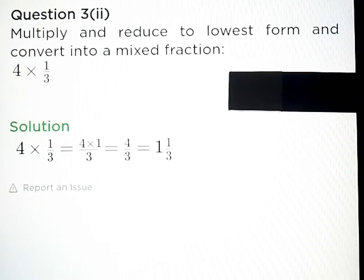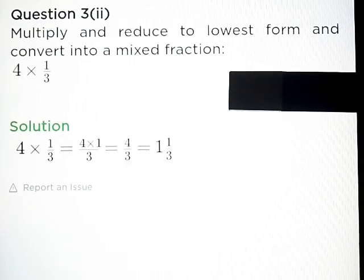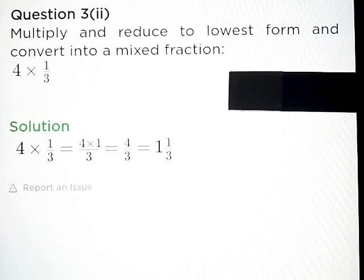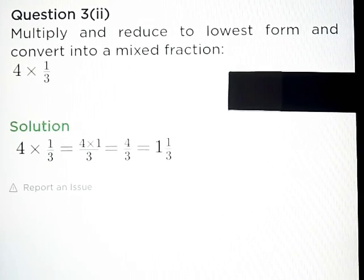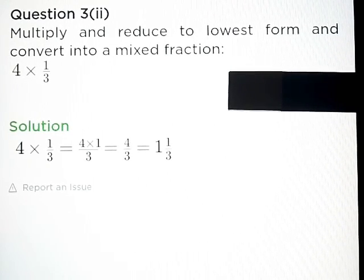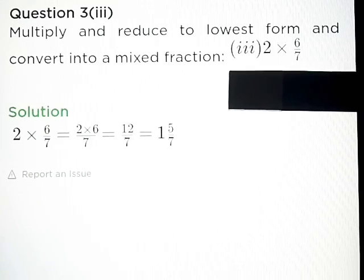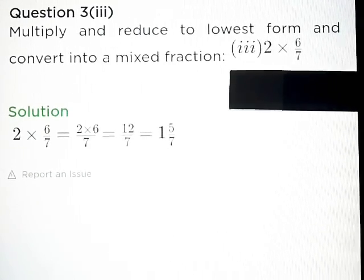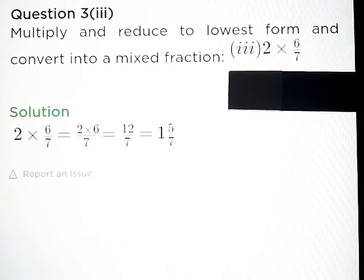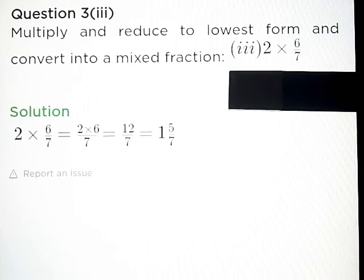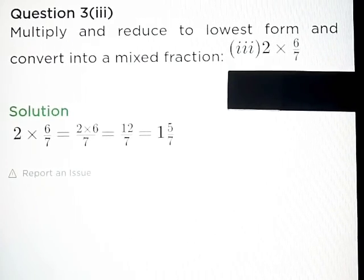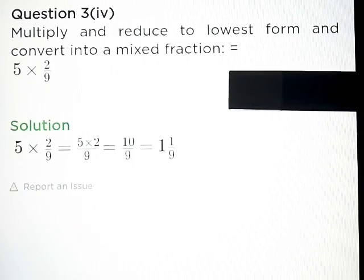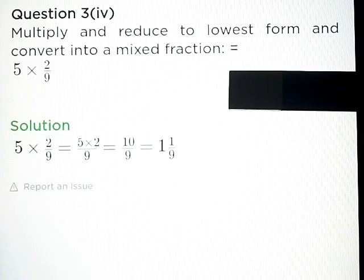Part B: 4 into 1 upon 3 is equal to 4 upon 3. Part C: 2 into 6 upon 7 is equal to 12 upon 7. Part D: 5 into 2 upon 9 is equal to 10 upon 9.